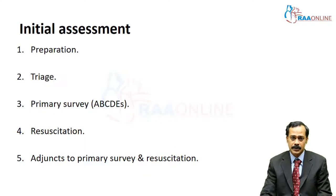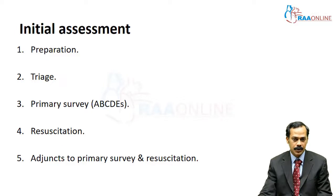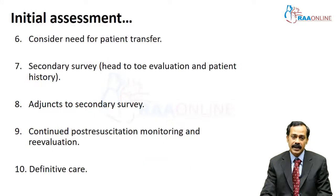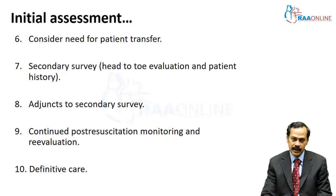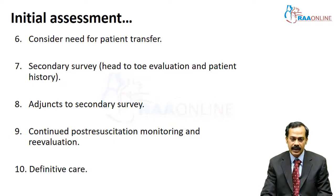Initial assessment of a trauma patient starts at the site of injury itself. The sequence goes: preparation, triage, primary survey, resuscitation, adjuncts to primary survey and resuscitation. At this stage you consider the need for patient transfer. If everything is going according to plan, proceed to secondary survey, adjuncts to secondary survey, continued post-resuscitation monitoring and re-evaluation, and finally definitive care.